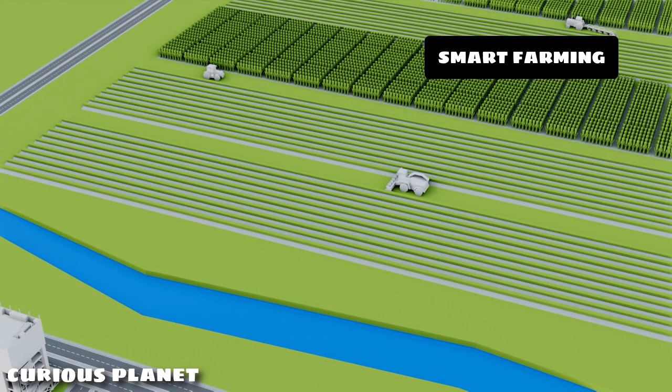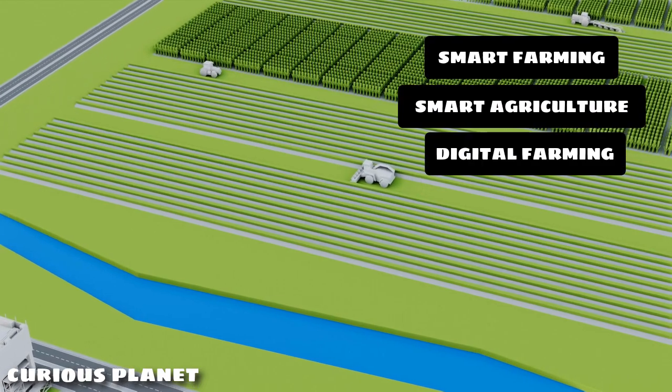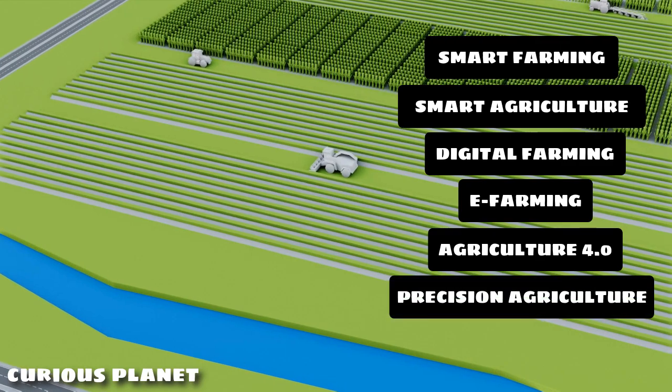Smart Farming, also known as Smart Agriculture, Digital Farming, E-Farming, Agriculture 4.0, and Precision Agriculture,